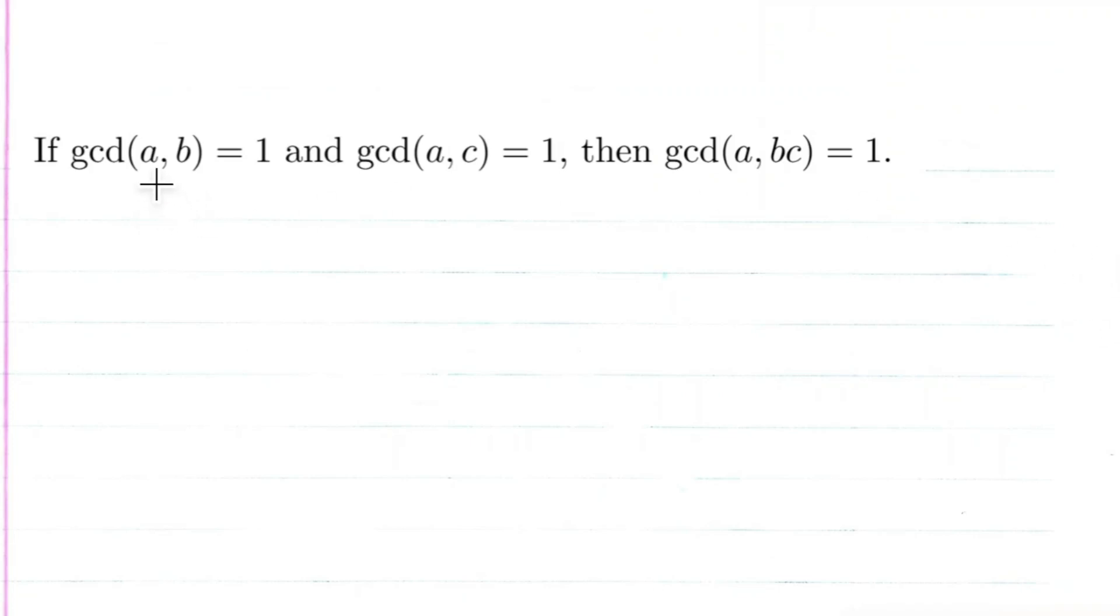Okay, so we're going to prove question 20A in Burton's Elementary Number Theory book, which states that if the GCD of A and B is equal to one, and the GCD of A and C is equal to one, then the GCD of A and BC is equal to one. So let's go ahead and start this proof.